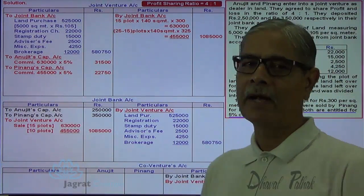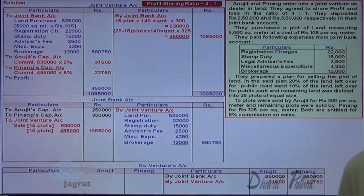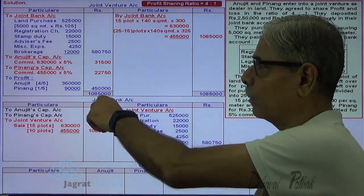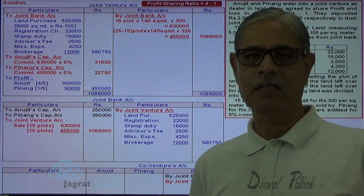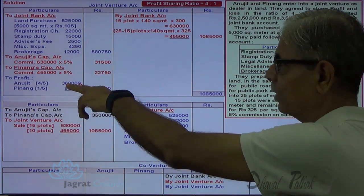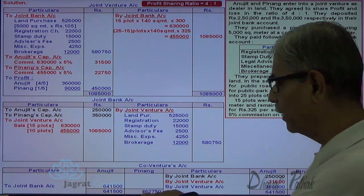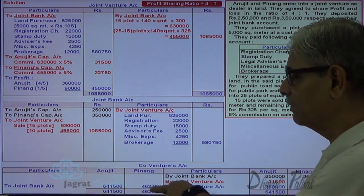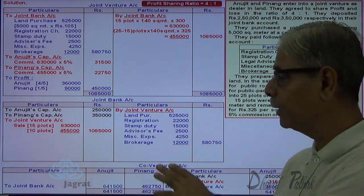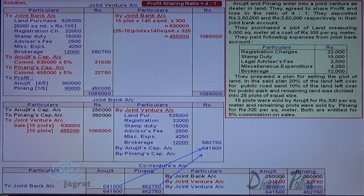After that, I am required to find out the profit of the joint venture business. Total of credit minus total of debit gives the profit, which will be distributed in the ratio of 4 to 1. So 4,50,000 × 4/5 = 3,60,000 is the share of Anujit, and 4,50,000 × 1/5 = 90,000 is the share of Penang. Joint venture account is debited and partners' capital accounts are credited — 3,60,000 credited to Anujit capital account and 90,000 credited to Penang capital account. Then the partners' capital is redeemed: 6,41,500 paid to Anujit and 4,60,750 paid to Penang from the joint bank account — joint bank account is credited.